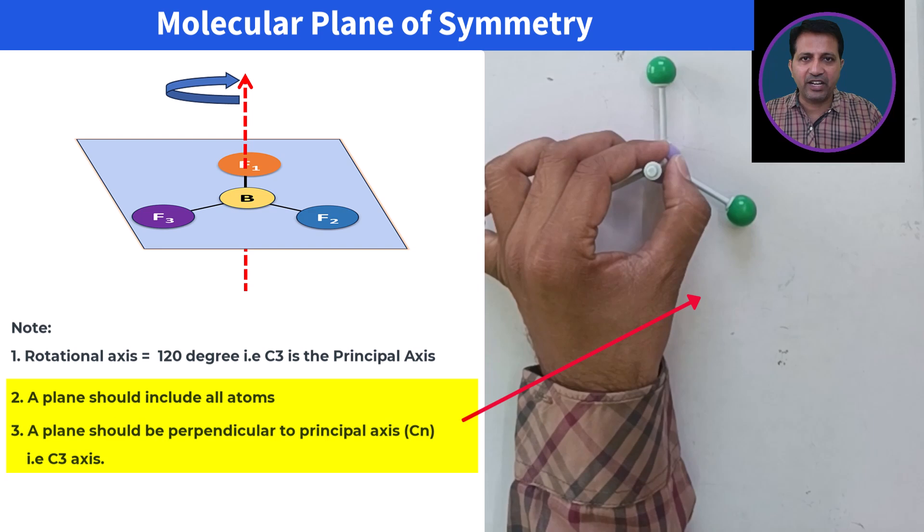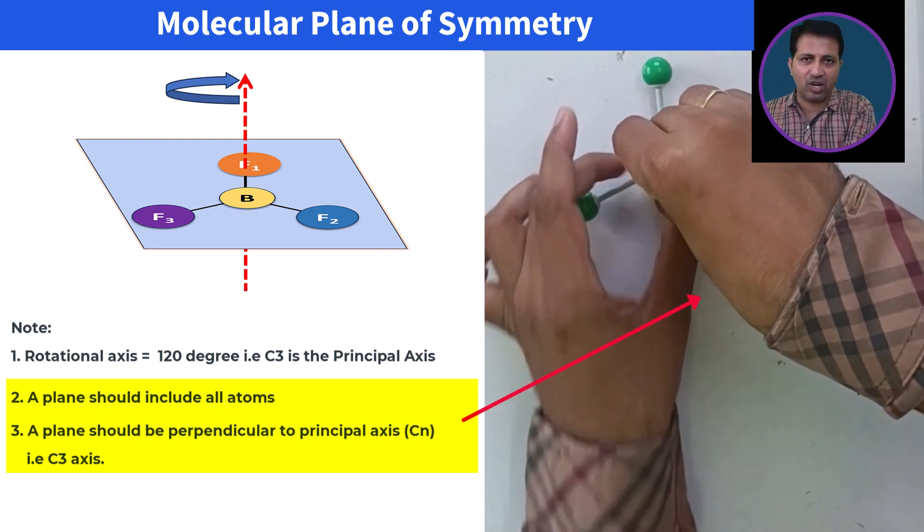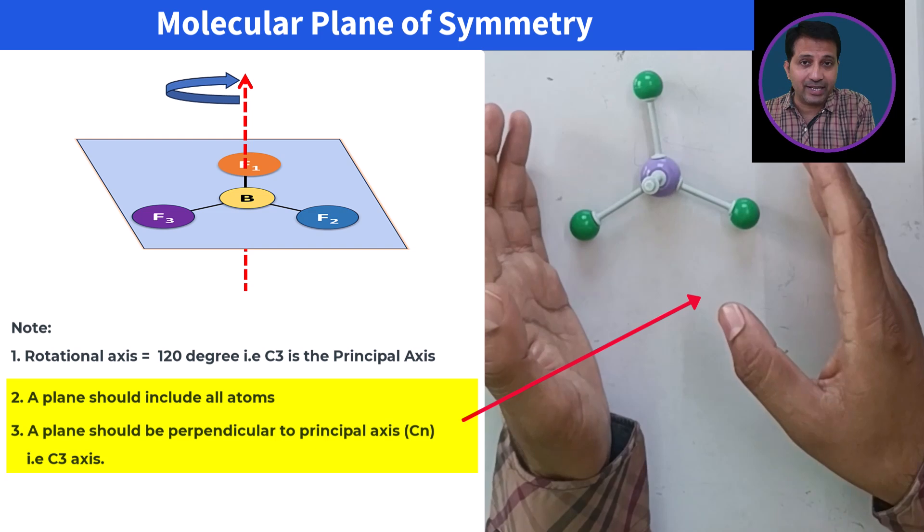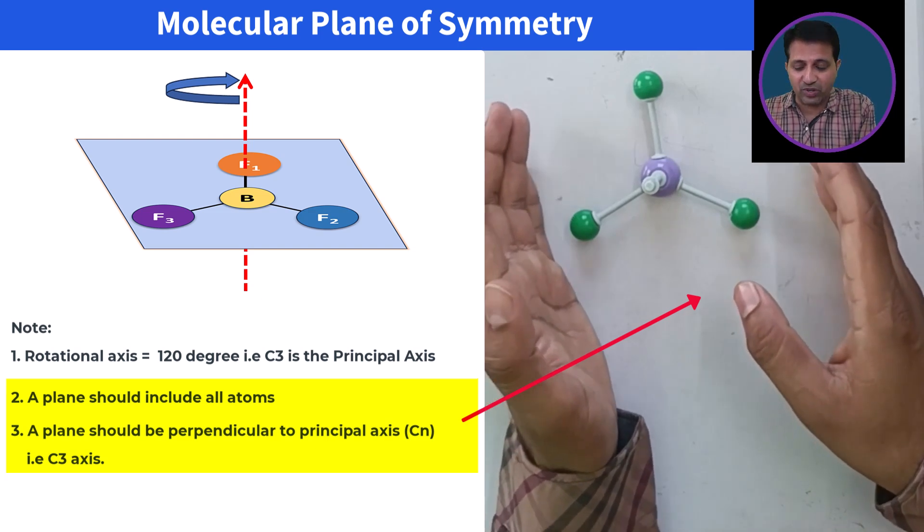Any plane that is perpendicular to the principal axis is called a molecular plane. This table itself acts as a molecular plane.